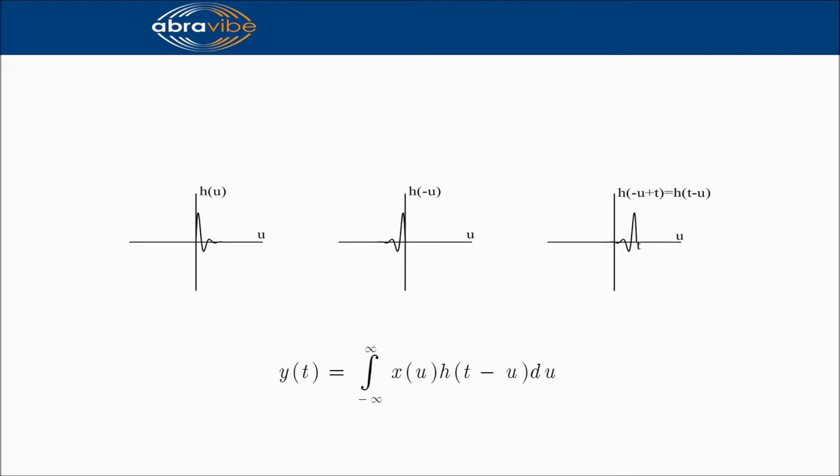So, we have now established that h of t minus u is simply the impulse response h of u reversed and shifted to end at u equals t. The next step in the convolution integral is the product of x of u and h of t minus u, which is integrated to produce y of t. Let's illustrate this with an animation.